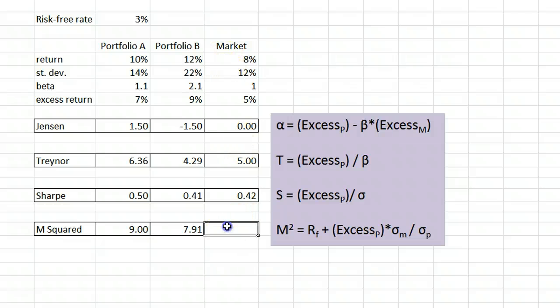We don't need to calculate M-squared for the market. M-squared is making an adjustment for portfolio's risk compared to the market risk, so there'd be no adjustment to make here, and we'd be left with the market's return of 8%.